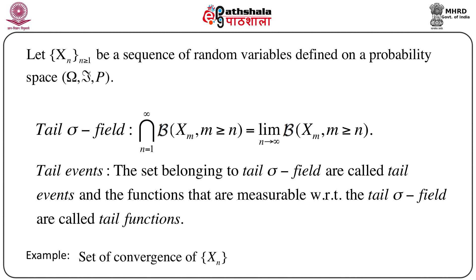One small example of a tail event is the set of convergence of Xn. That means if we define convergence of a sequence Xn, the set on which it converges is a tail event.